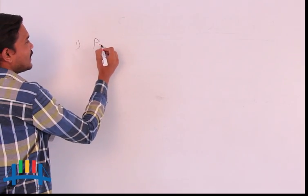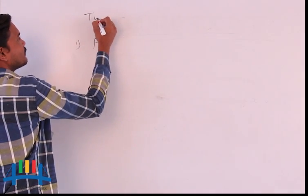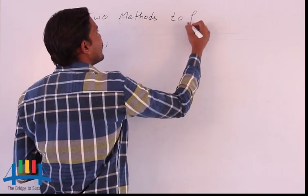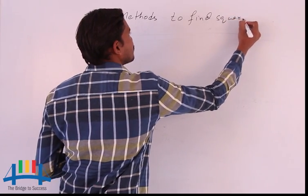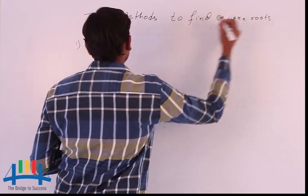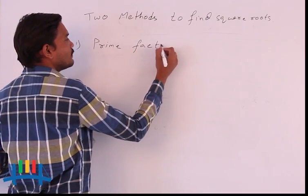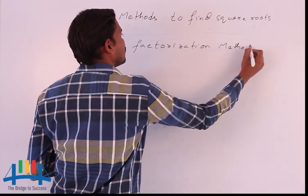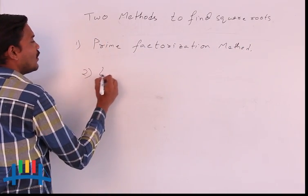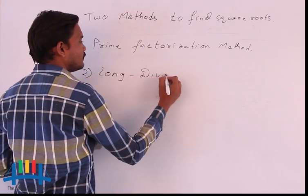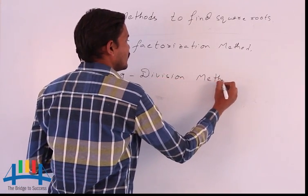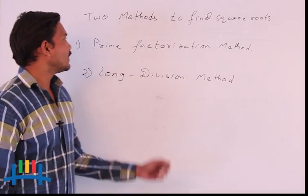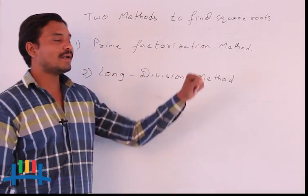The first method is the prime factorization method. The second one is the long division method. These two methods we will apply for bigger numbers to find the square roots. We will go for the first method, prime factorization method, with two examples.